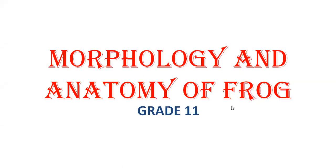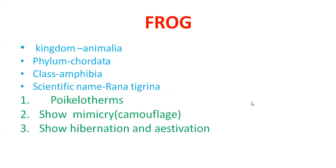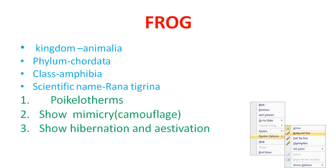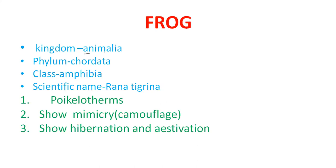Hello kids, today's video topic is morphology and anatomy of frog, grade 11. First, let's talk about the classification of frog. Frog belongs to kingdom Animalia, phylum Chordata, class Amphibia, and scientific name Rana tigrina. Rana is genus and tigrina is species.